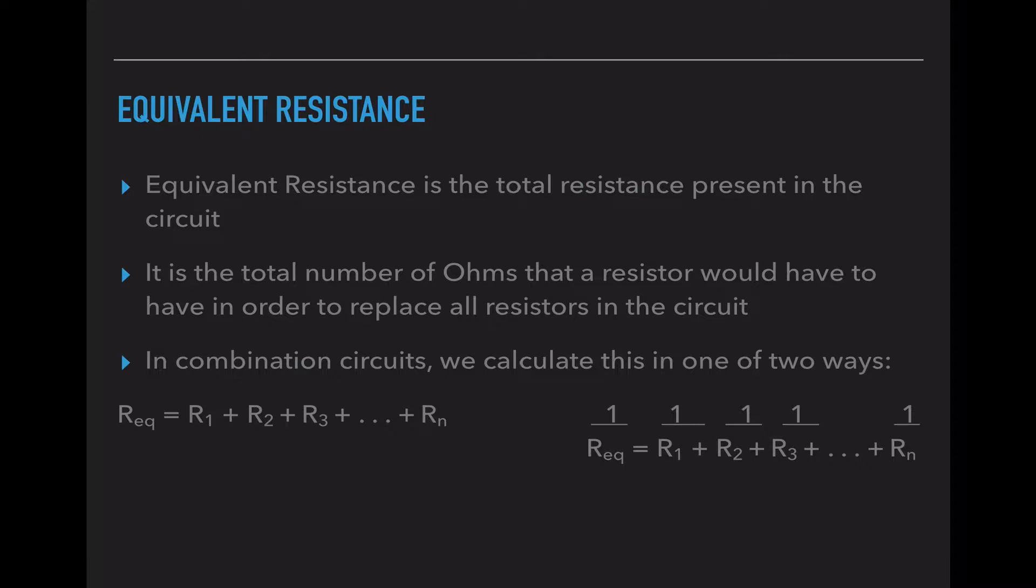And we will use 1 over REQ equals 1 over R1 plus 1 over R2 plus 1 over R3. We will have to use both of these relationships paired with our V equals IR equation to fill in our tables. So I'm going to show you a couple examples of how to do that.